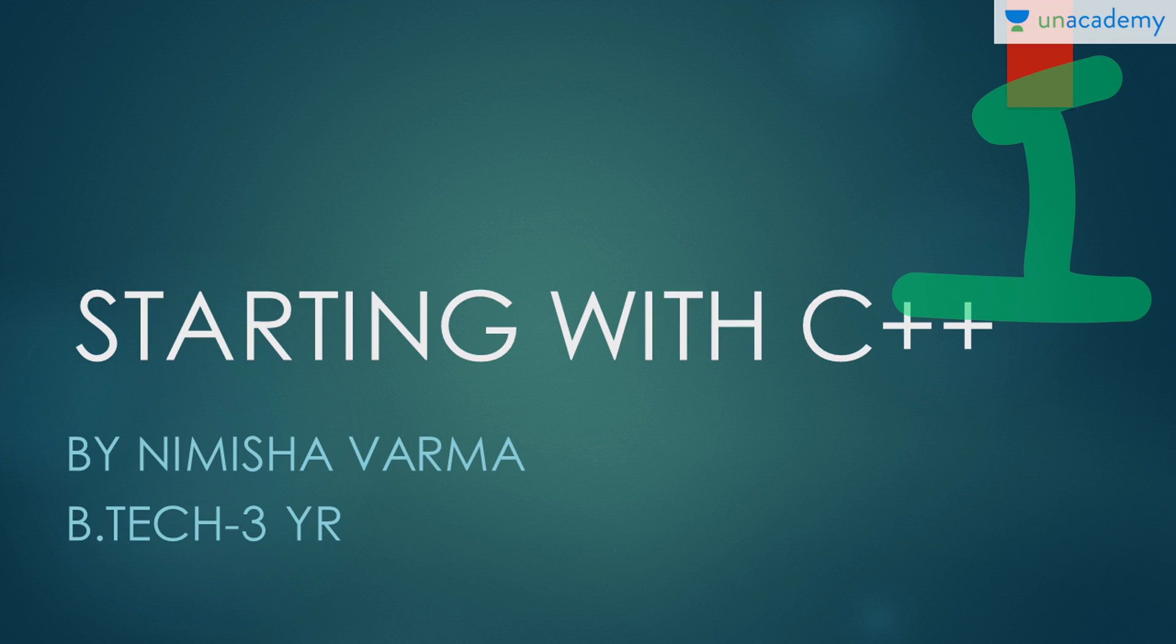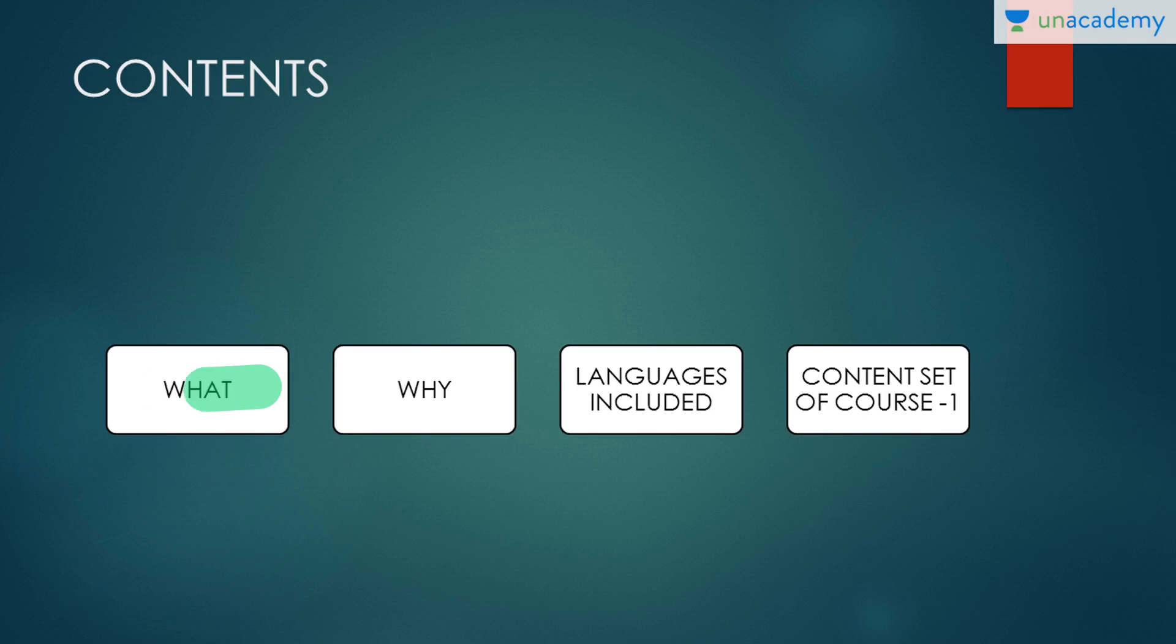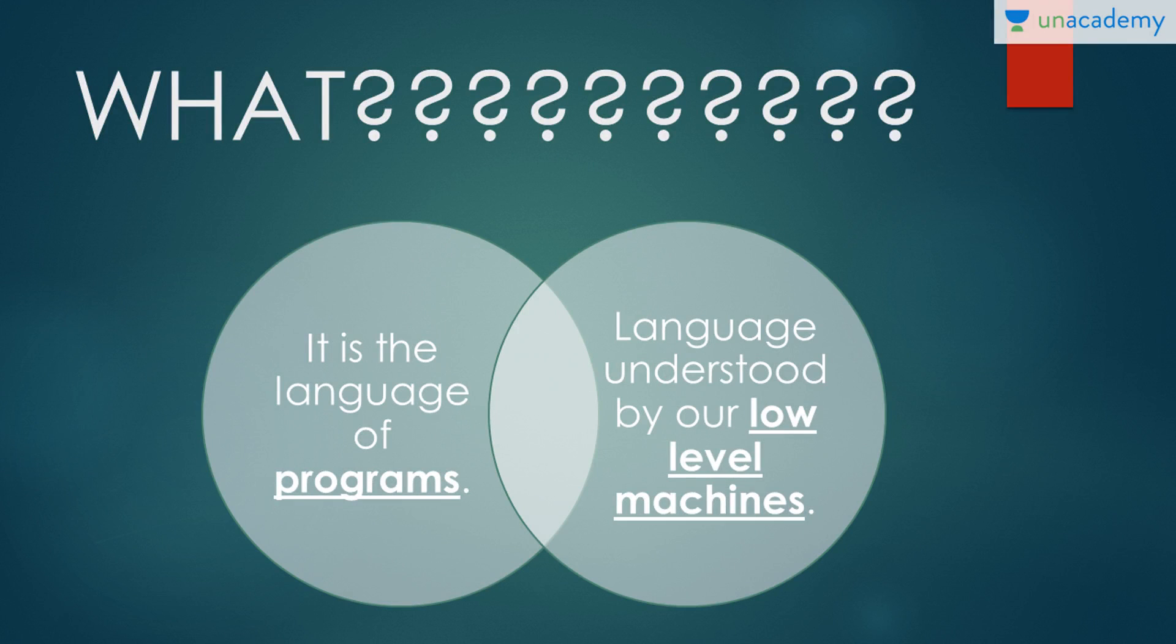The contents include what is C++, why was it developed, and the content set of course. First of all, what is programming language? Programming language is the language understood by our low level machines. It is the language of programs - a binary collection of data, collection of ones and zeros. Low level machines are machines like computers, fans, lights, laptops, etc.